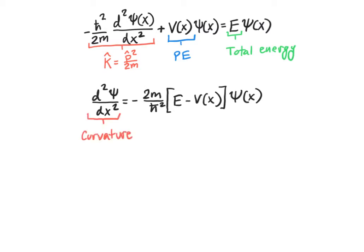The second derivative represents the curvature of a function — the rate of change of the rate of change. It tells you how quickly the slope is changing. The curvature depends on the mass of the particle and Planck's constant, but since these are constants we can safely ignore them for qualitative analysis. It also depends on the value of the wave function itself and on the difference between the energy of our system and the potential at a given position. If E minus V is a large positive or large negative number, the curvature will be correspondingly large, and its sign influences the sign of the curvature.